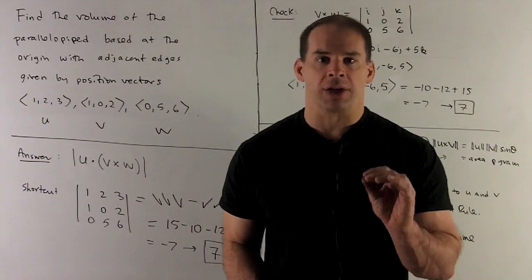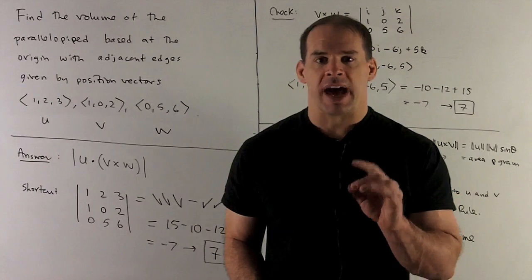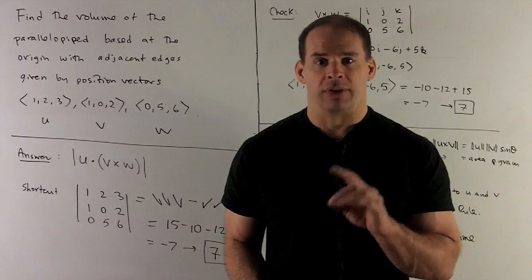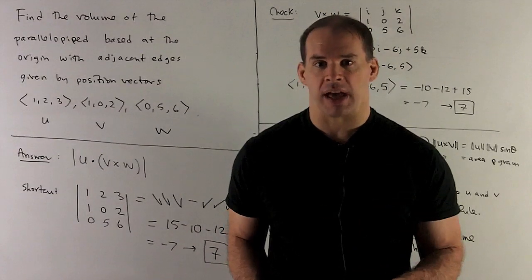So our answer is going to be take the dot of the first vector with the cross product of the second two. Whatever number comes out, you throw away the sign.